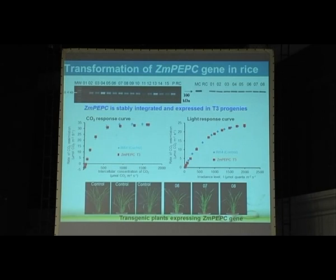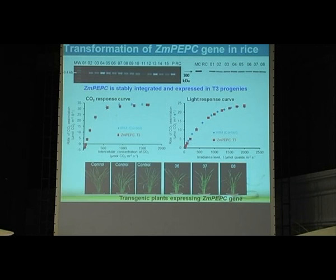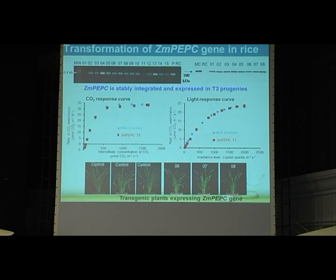We also checked physiology by doing photosynthetic measurements. On the left is the CO2 response curve — both the transgenic (in red) and the rice control show similar levels of photosynthesis increasing with carbon dioxide. We did not see major improvement in the transgenic, which is quite expected as we don't expect a vast change with a single gene, and previous authors have reported similar results for maize PEPC. On the right is the light response curve — both transgenic and control show similar response. The plants show phenotype similar to control and produce a good amount of seeds.